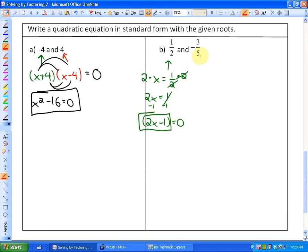My other factor is going to be when x is equal to negative 3 fifths. So if I multiply both sides by 5, I have 5x is equal to negative 3. And add 3, I'll be left with another factor equal to 0, 5x plus 3.